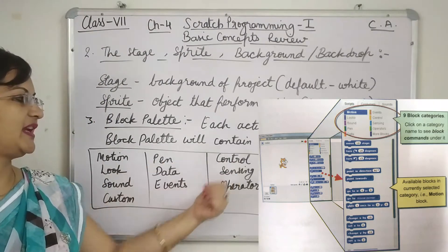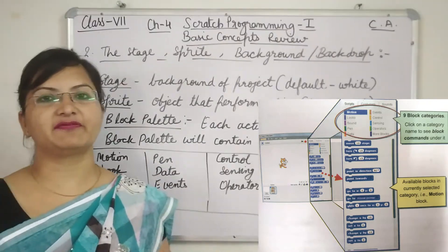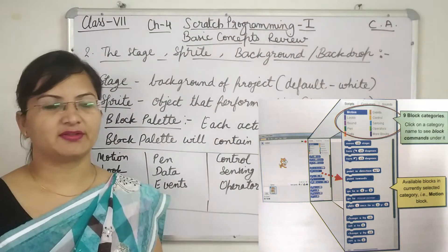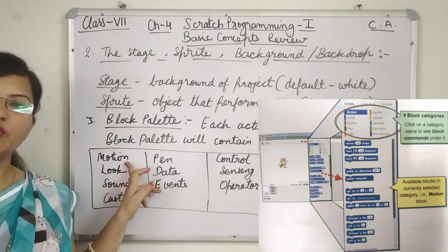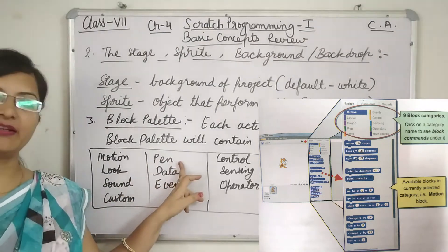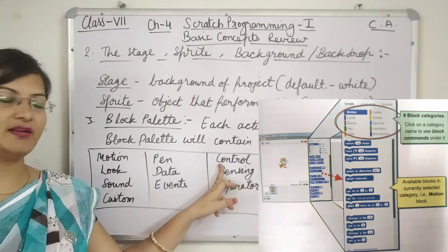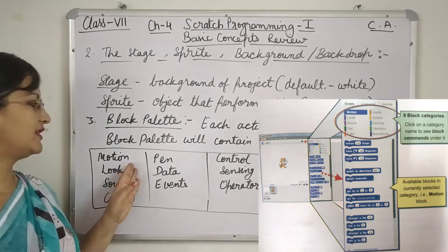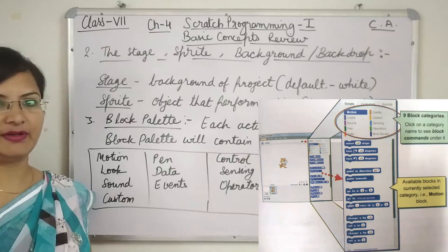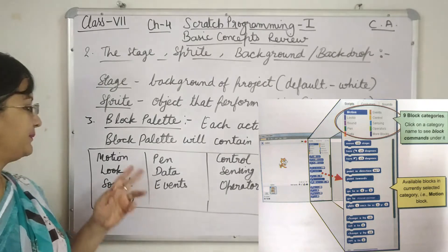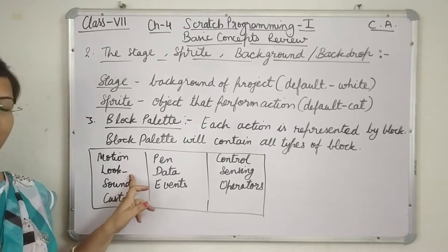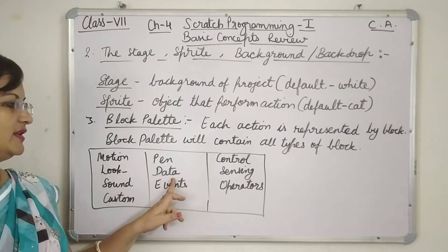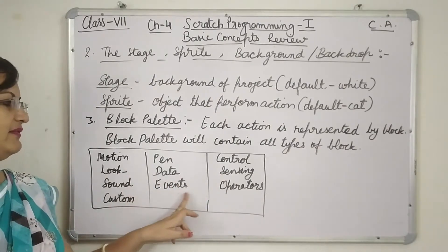Every category is represented by a different color. Blue blocks are motion blocks. Pen blocks are in green. Control blocks are in yellow. There are different colors for different categories. If there is motion, you will see dark blue blocks. For changing the look of the Sprite, there are look blocks. Other categories include data, sensing, sound, events, and operators.